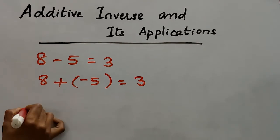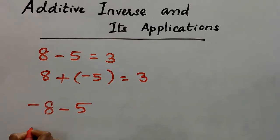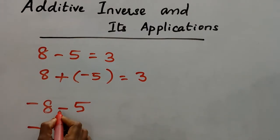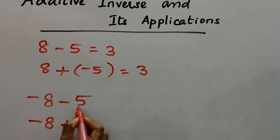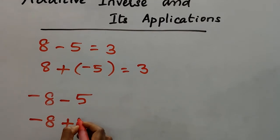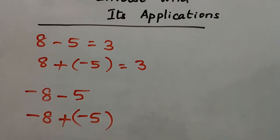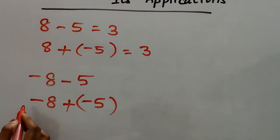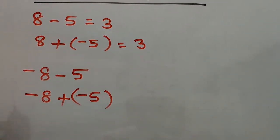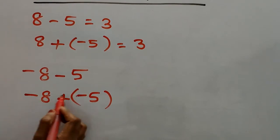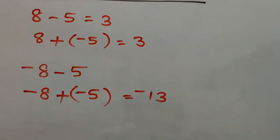Let me explain with another example: negative 8 minus negative 5. The first number is negative 8. I'm going to change the subtraction to addition. The additive inverse of negative 5 is positive 5. Here both numbers are negative, so add and put the negative sign. 8 plus 5 is 13, so the answer is negative 13.